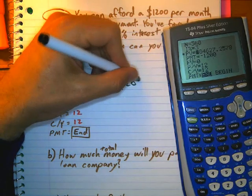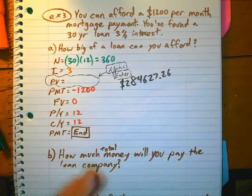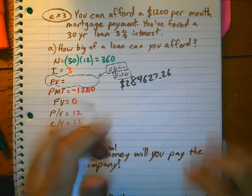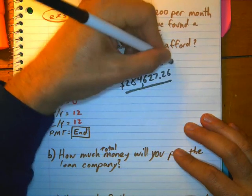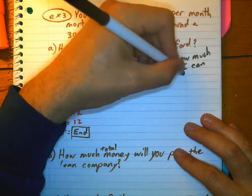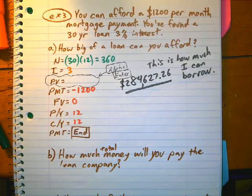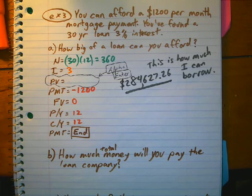284,627.26 cents. So, this is how much money I can borrow if I'm giving the bank $1,200. So, $1,200 a month. With a two-income household, you could afford half a million dollar condo, possibly.